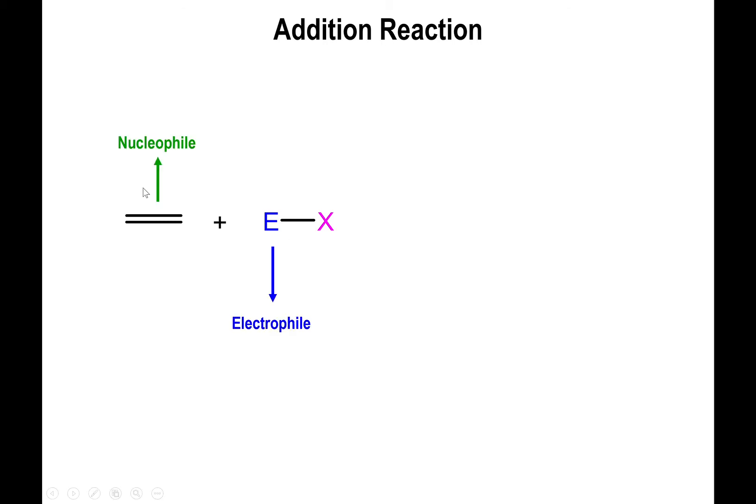In essence, the multiple bonded molecule acts as a nucleophile and the second reagent behaves as the electrophile, the one that wants the electrons. And what you end up forming is something known as the addition product.